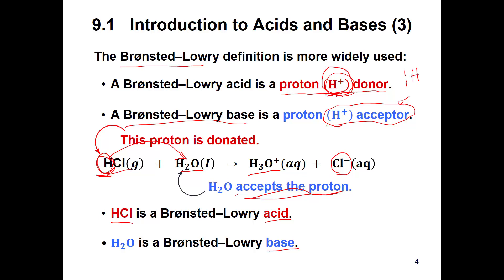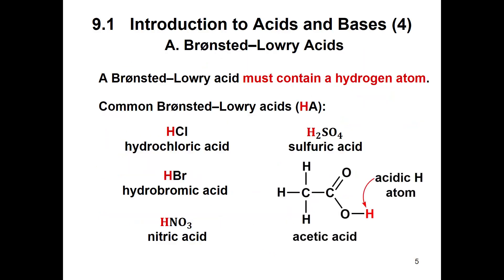A Bronsted-Lowry acid must contain a hydrogen atom, and so we write a general formula as HA. We write that H at the beginning of the formulas, so when you see something that starts with an H then you know that that is an acid. An organic acid like acetic acid sometimes has that H written at the end, so if you see CH3COOH, that's the organic acid. These were inorganic acids, they're more what we think of. Acetic acid is vinegar, by the way.